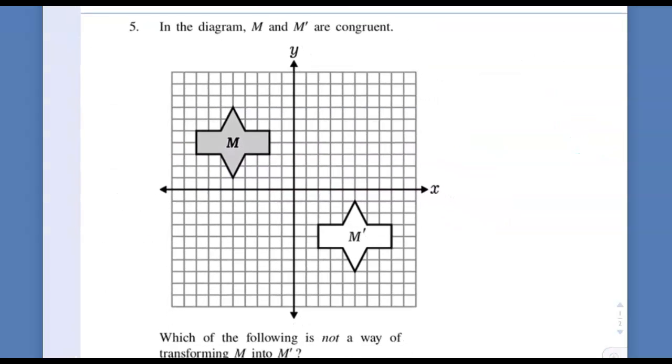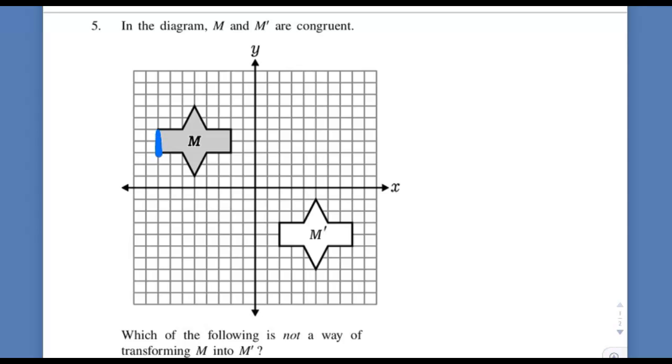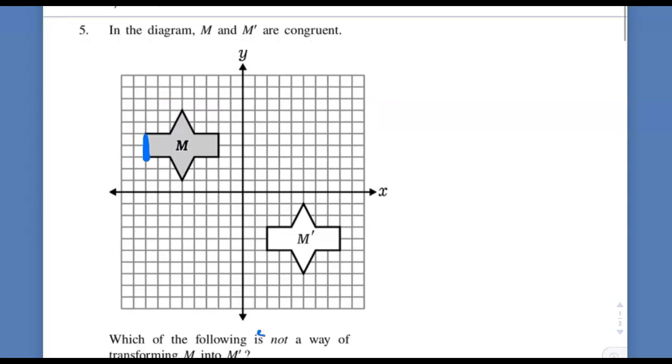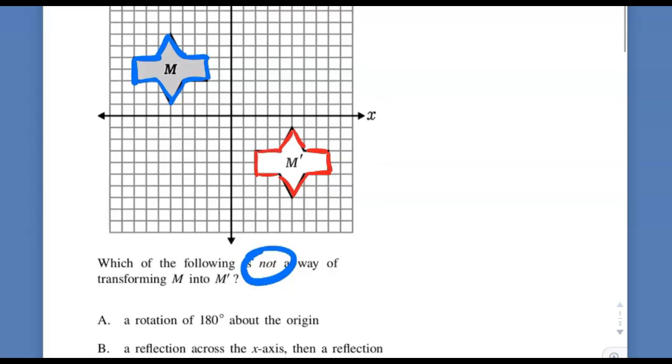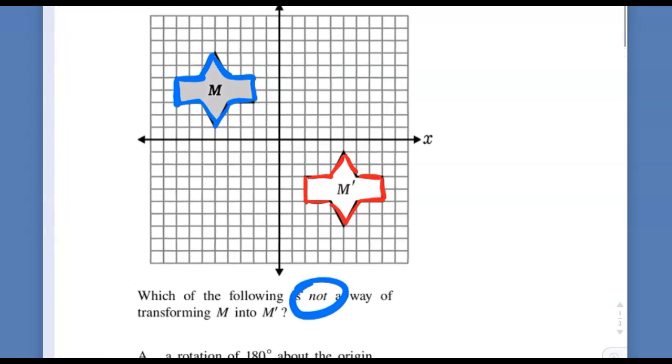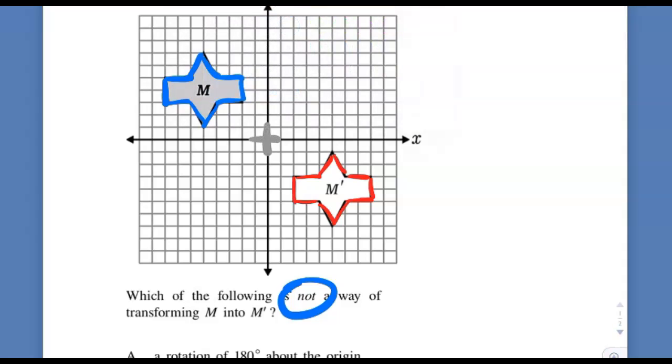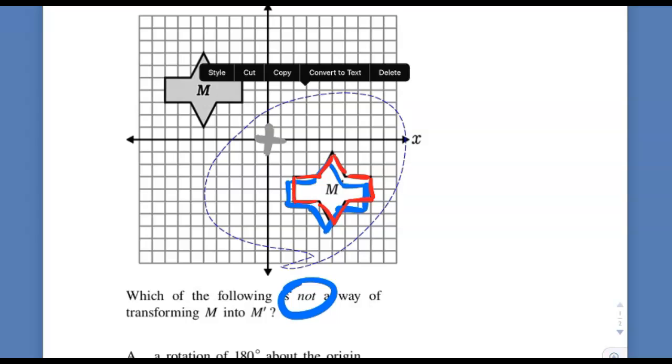And this last problem, it wants us to know which one of the following choices down here could not be a way of transforming M, which is this goofy shape, onto M prime, which is this goofy shape. Now they didn't label any corners, so they're kind of giving us freedom to decide what the top and what the bottom is here. Which one could not be? Let's try the first one. If you rotate this 180 about the origin, it does line up perfectly. So that one does work.